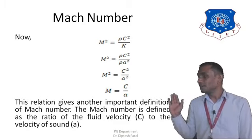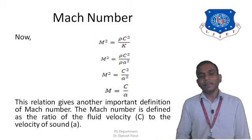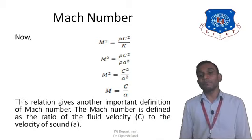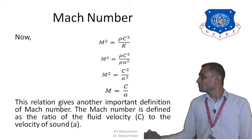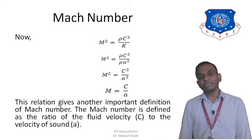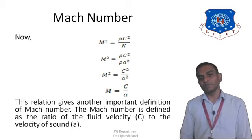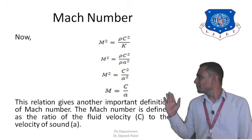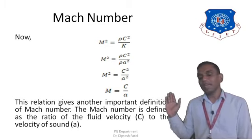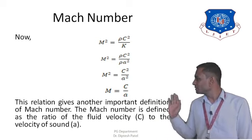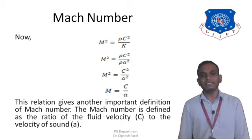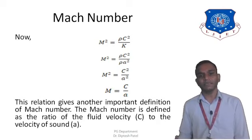This equation gives us another definition of Mach number: Mach number is defined as the ratio of the velocity of the fluid to the velocity of sound, where C is the velocity of the fluid and a is the velocity of sound, as derived from this equation.